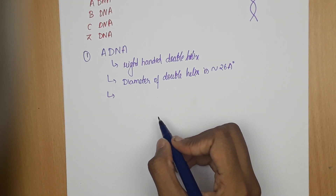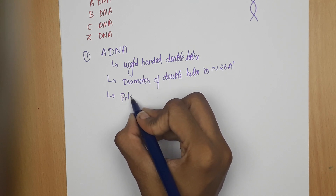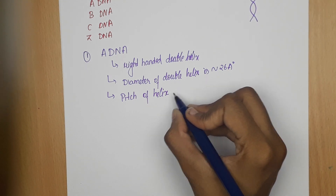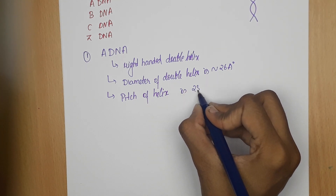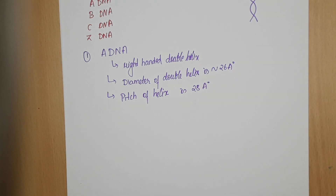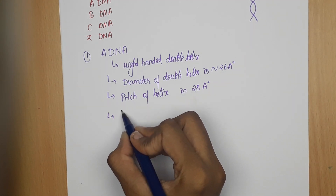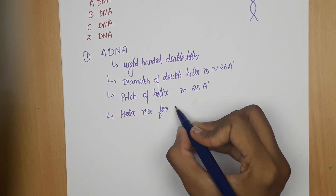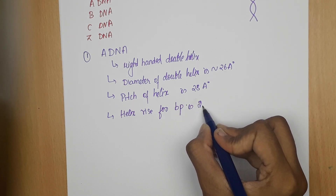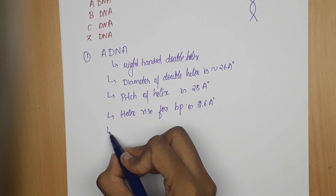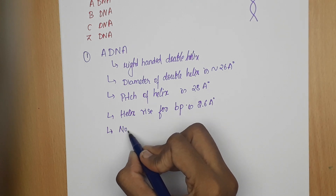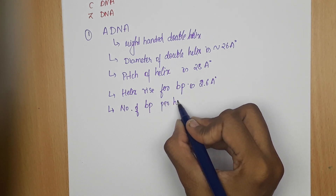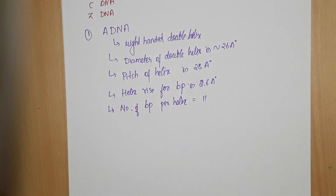The pitch of this helix is 28 angstroms, and the helix rise per base pair is 2.6 angstroms. The number of base pairs per helix is 11.